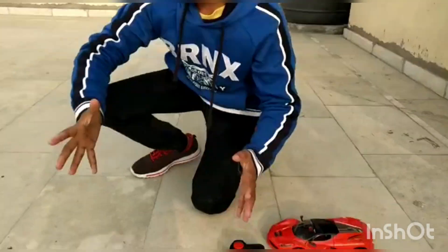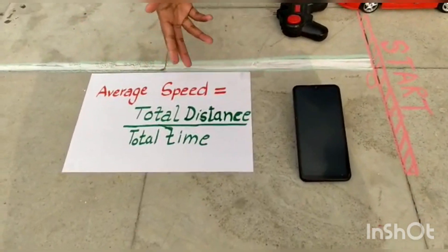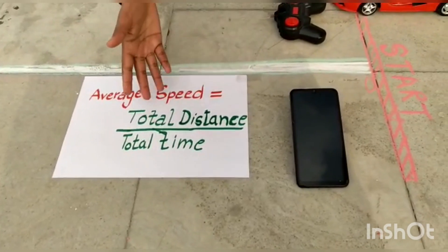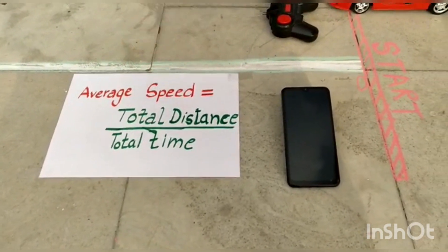Hello everyone! Today I am here to calculate the speed of my car, and that's the average speed. To calculate the average speed of a car, we need this formula: average speed equals total distance upon total time.